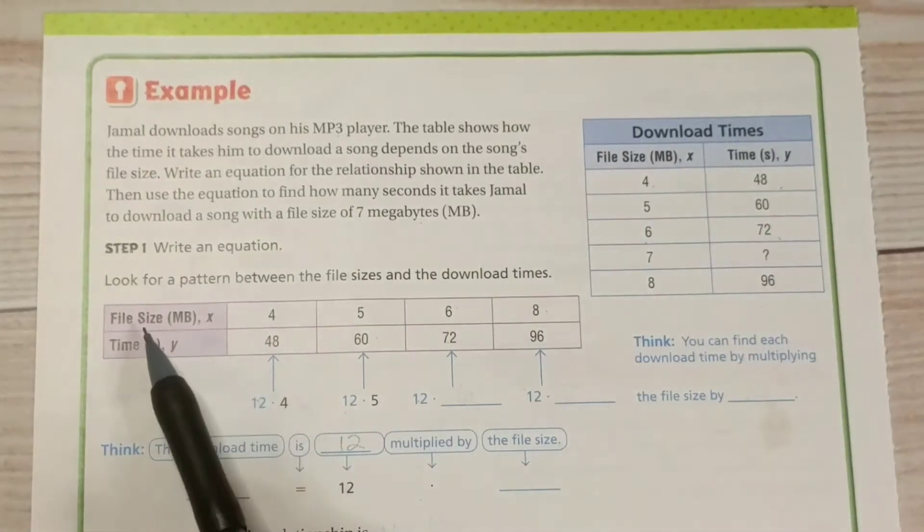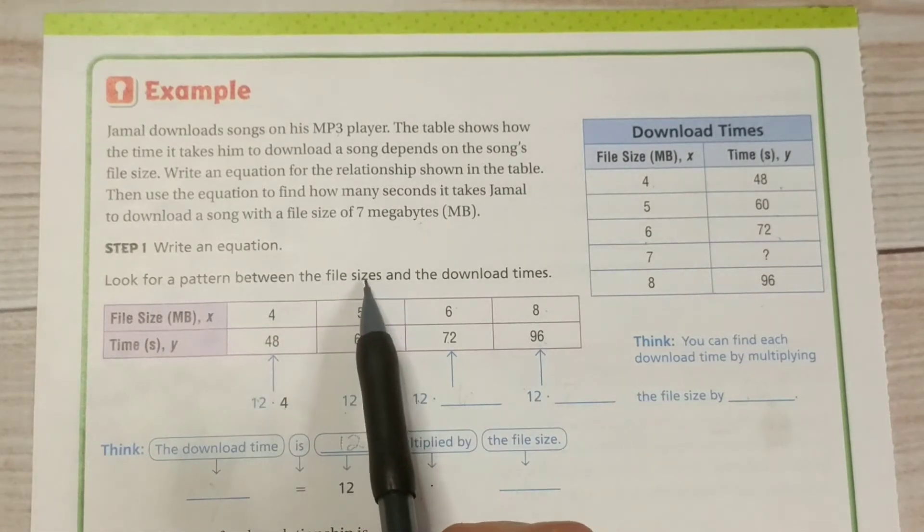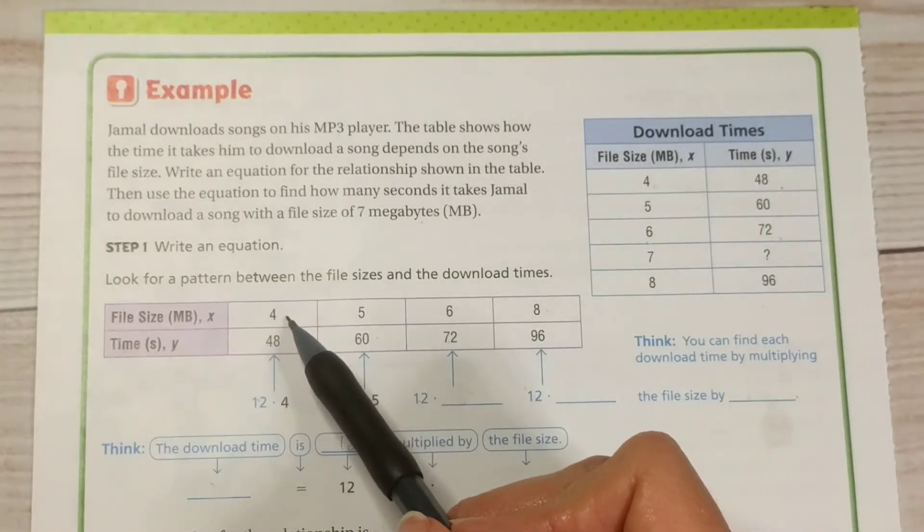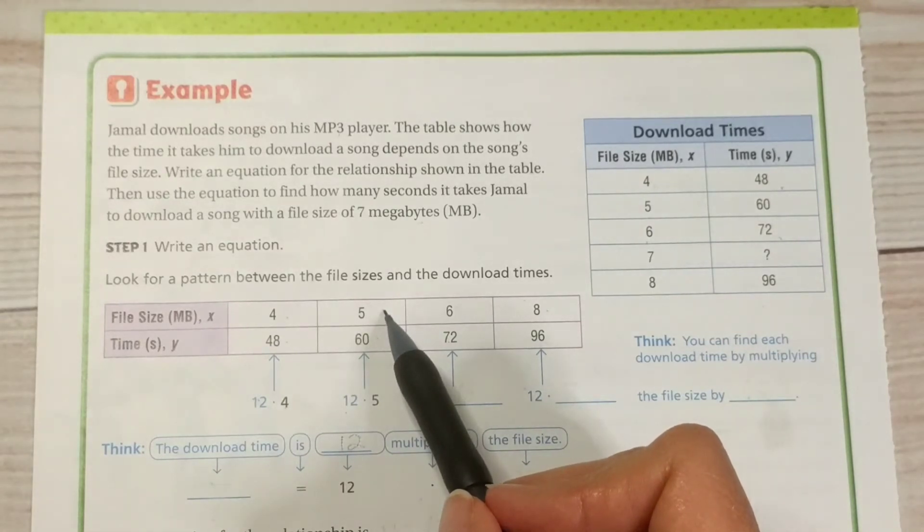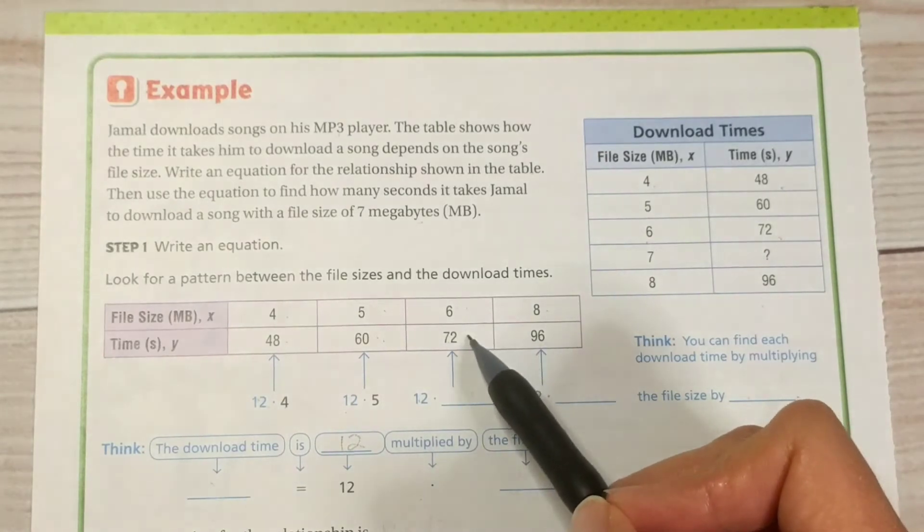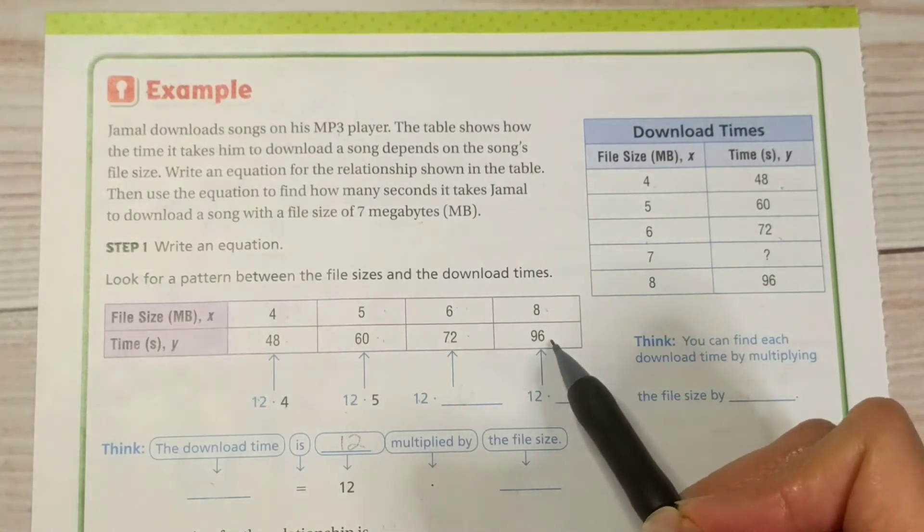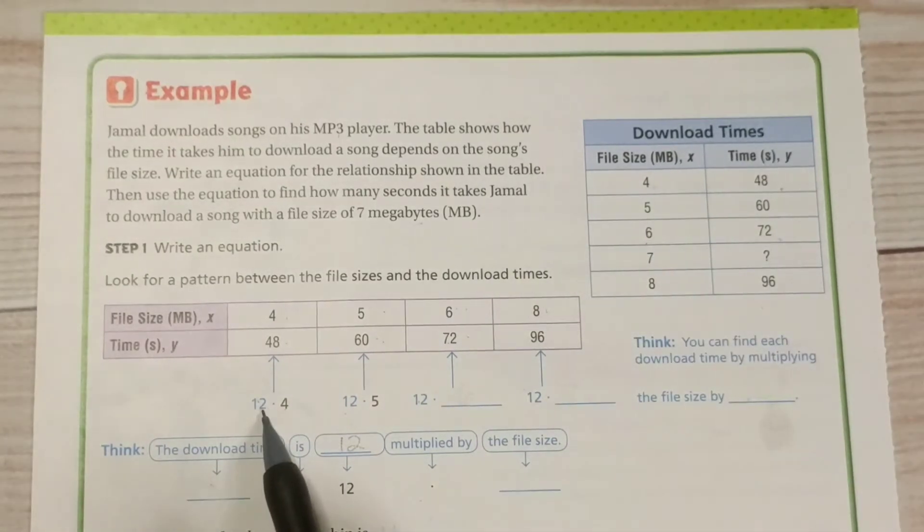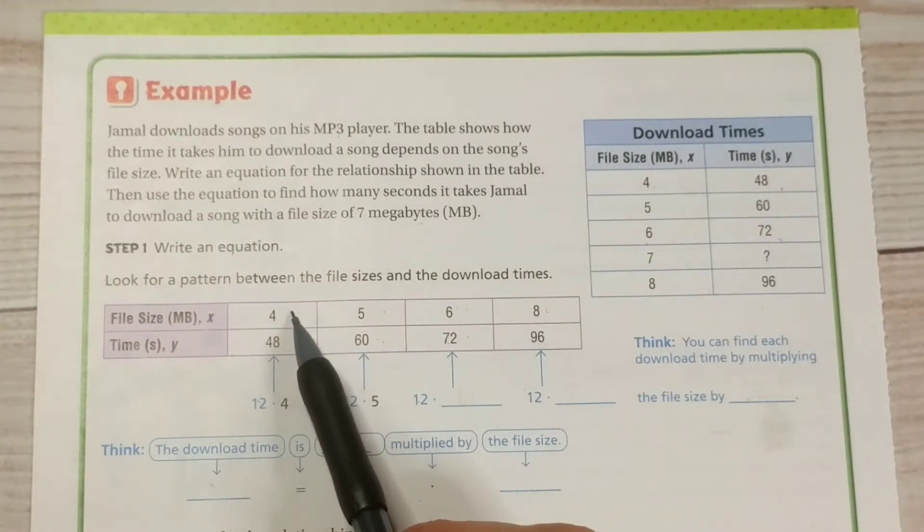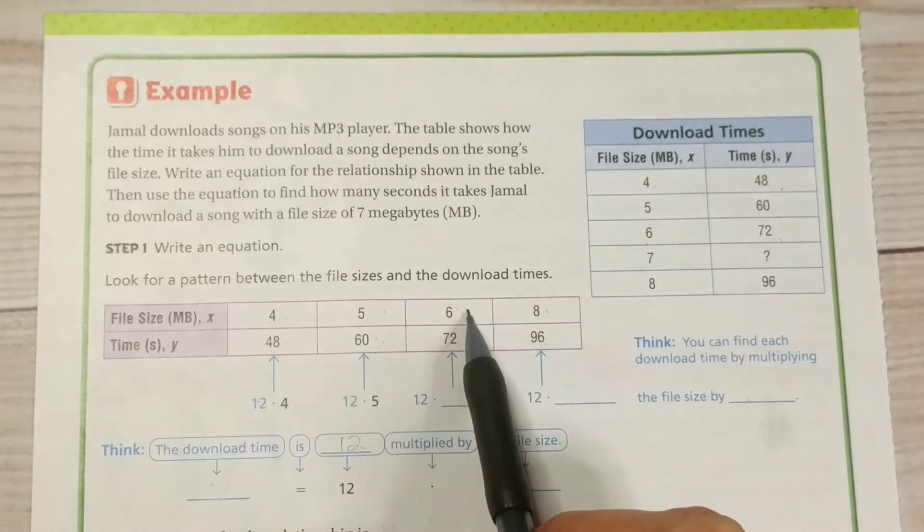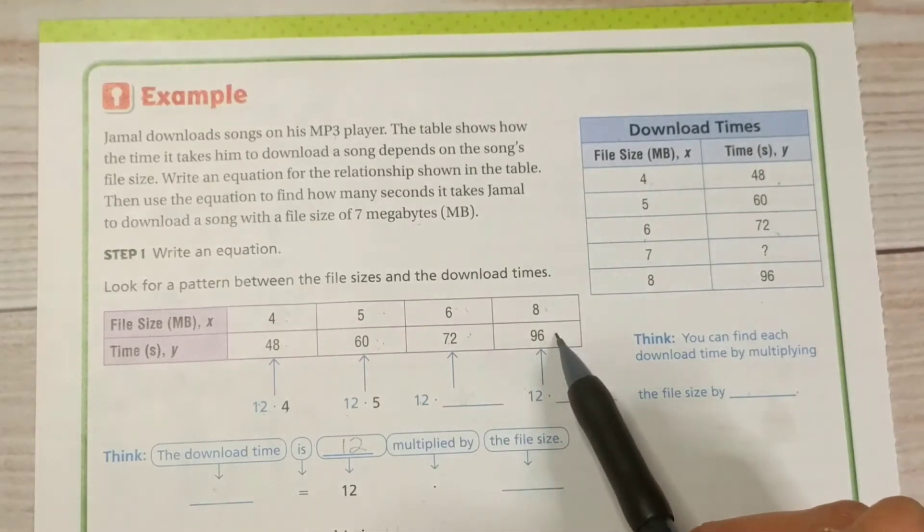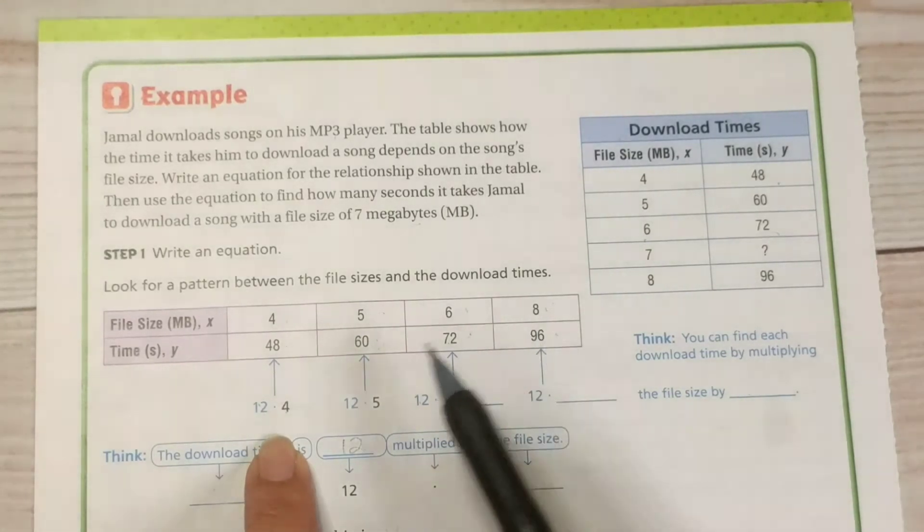So, if we make a table, we're going to look for a pattern between the file size and the download time. So, 4. What's the relationship between 4 and 48? And then that same relationship has to apply to this 5 and 60 also. So, the 6 and 72 and the 8 and 96. And what we realize is that we're multiplying by 12. 4 times 12 gives us 48. 5 times 12 gives us 60. 6 times 12 gives us 72. 8 times 12 gives us 96.